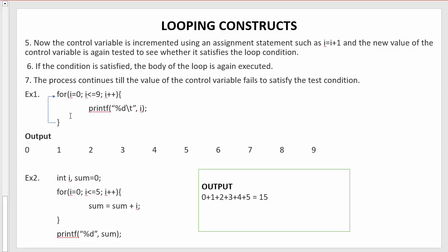With each iteration i is incremented by 1. When i becomes 9, the condition checks: is 9 less than or equal to 9? Yes — 9 equals 9 — so control enters the loop and prints 9. After that, i is incremented to 10. The condition checks: is 10 less than or equal to 9? No, the condition becomes false, so the printf does not execute and control exits the for loop.